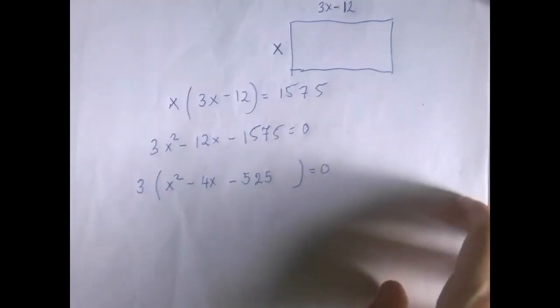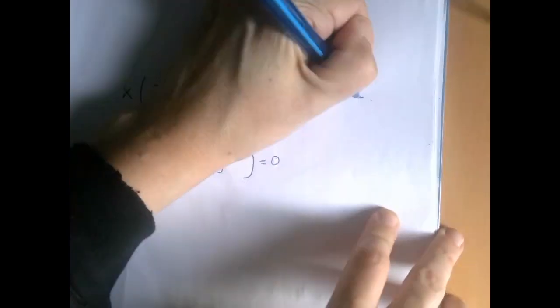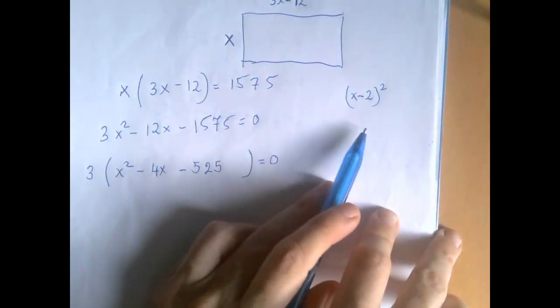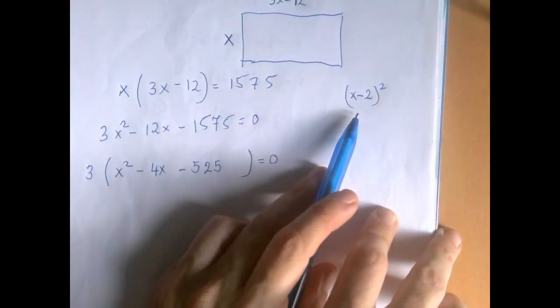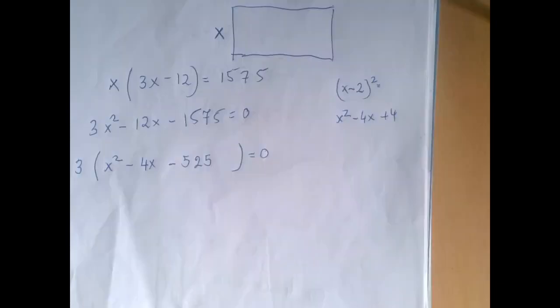So now we can proceed completing the square. Half of the linear coefficient is negative 2. So our complete square to go for is x minus 2 squared. When we expand that, we're going to get x squared minus 2x minus 2x will be minus 4x and plus 4.